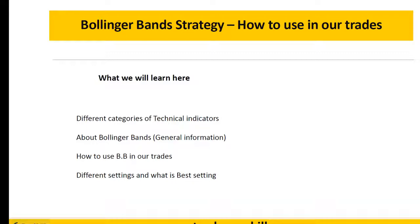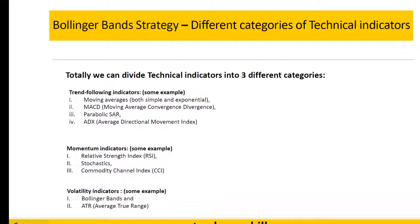What we're going to learn today is the different categories of technical indicators, then we'll talk about Bollinger Bands — the general information and how to use this indicator in our trades. We'll also cover the different settings, the best setting, and go to a live chart to see how it works.